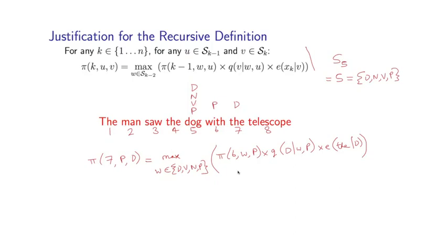For each possible value of the tag, we multiply in the pi value, and then a q value of d given the previous two tags, and finally an emission value of the given d. The reason we do that is if we fix a particular tag, say n, at position 5, then the following property holds.